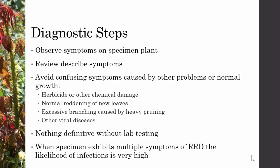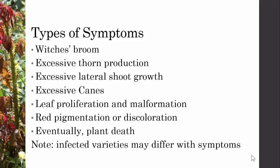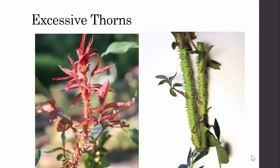There are several diagnostic steps, but primarily we want to observe the symptoms on the plant. We can run diagnostic tests in the lab to confirm with DNA analysis. The types of symptoms the virus causes include witch's broom, excessive thorn production, excessive lateral shoot growth, excessive canes, leaf proliferation and malformation, red pigmentation or discoloration, and eventually plant death. It should be noted that symptoms can appear differently across different varieties, so it's important to be aware of that.